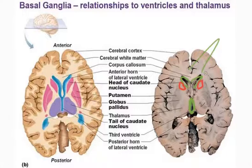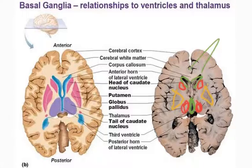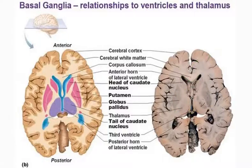Lateral to the third ventricle we'll be having the two thalami. The gray matter right here will be the two thalami, and then we know we'll be having a very distinctive white matter called the internal capsule — we'll come back to that in a moment. Still on the gray matter: this will obviously be our lentiform nucleus, the two lentiform nuclei made up of the putamen on the outside and the globus pallidus on the inside.